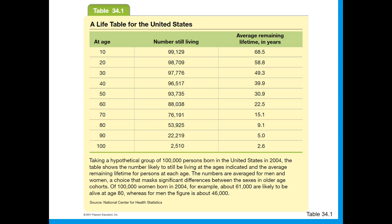I'll show you the table and maybe it'll make a little bit more sense. This is for a given hypothetical group of 100,000 people in the United States. At age 10, most folks in this group are still alive and have an average of 68 and a half more years to live.